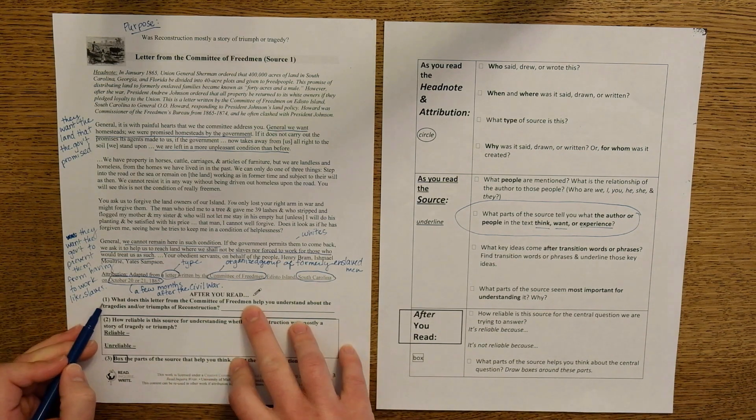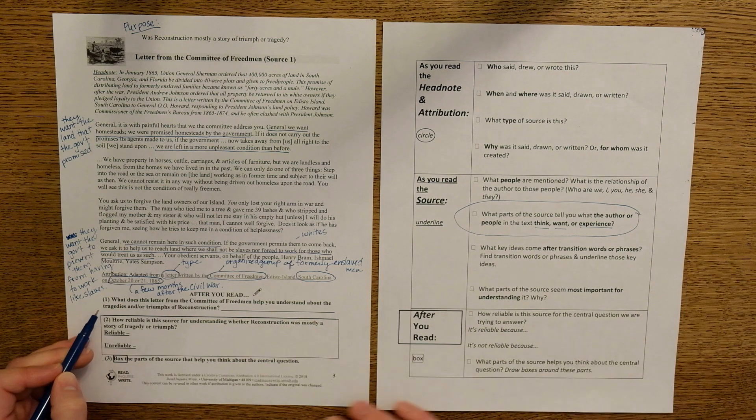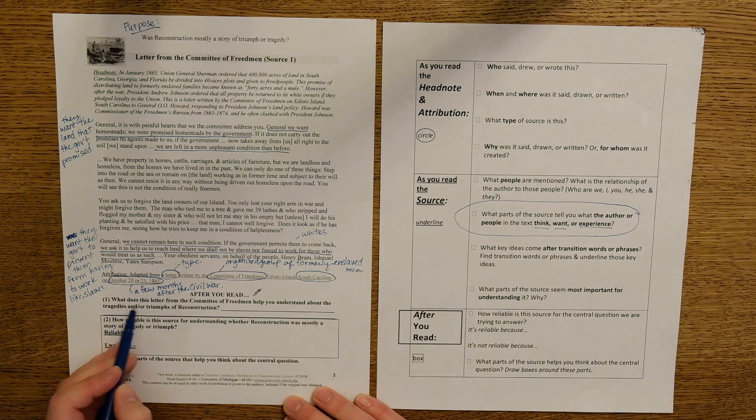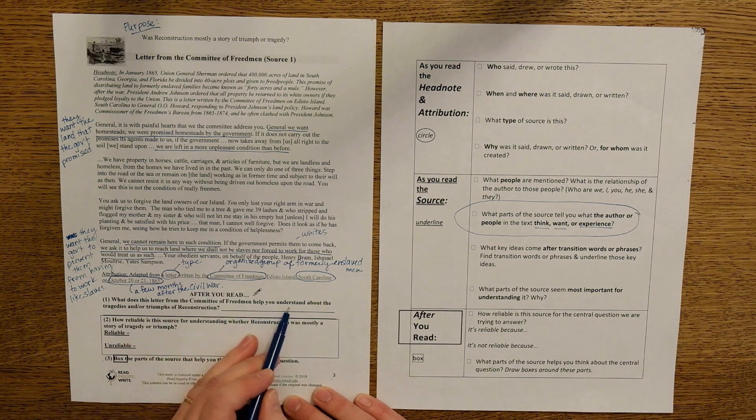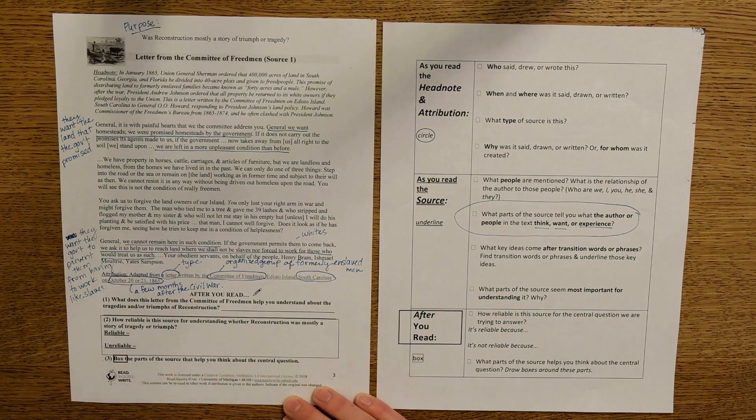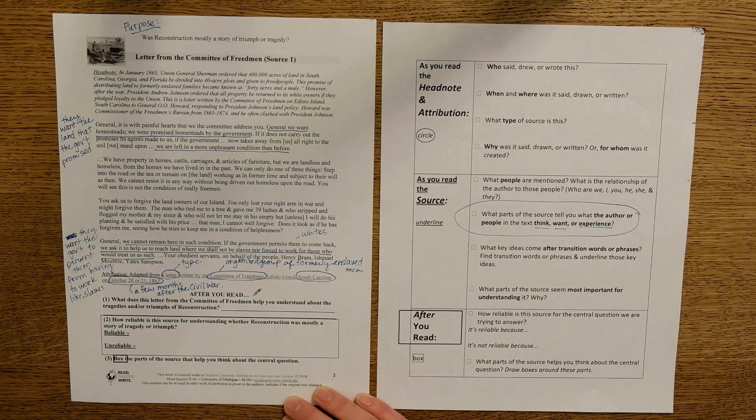With a partner, read through question number one. We're now after you read. And discuss, what does this letter from the Committee of Freedmen help you understand about the tragedies or triumphs of Reconstruction? Was Reconstruction more of a tragedy or more of a triumph? And how do you know?